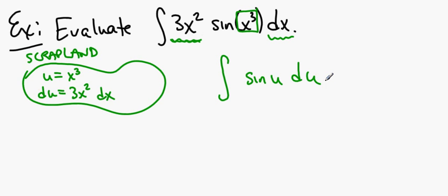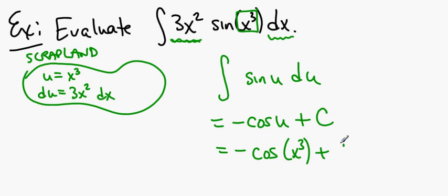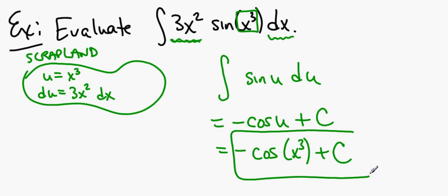The anti-derivative of sine u du is negative cosine u plus a constant. And so we substitute back in, and we're done. So now there's no guesswork. We have a process by which we replace a complicated expression with u, because its derivative happens to be hiding somewhere in the integrand, and we can make the integration very, very straightforward.